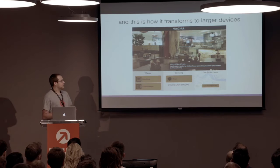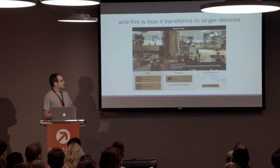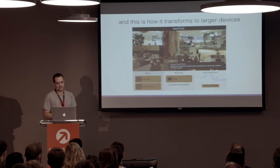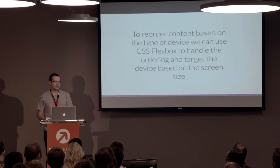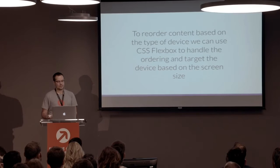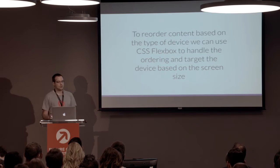If we look at how we can transform that onto larger devices, we can lead with the atmosphere with big, bold imagery telling our users about the story of our restaurant. Then we can have a clear call to action — menus, booking, and directions. To reorder content, we can use the CSS Flexbox layout module level one specification, which allows us to handle the ordering of our content. Then we can use media queries to target this based on screen size.